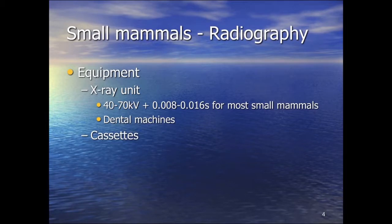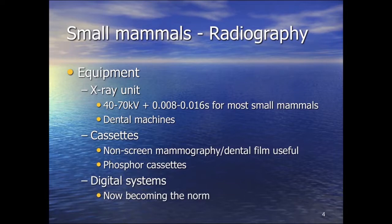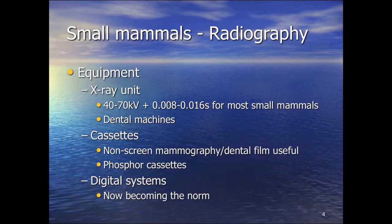Equipment-wise, for most small mammals, 40 to 60-70 kilovolts, 0.08 to 0.016 seconds is typically the minimum that you need. Most small head machines will go up to 90 or 100 kilovolts. Dental machines are really useful if we're talking about rodents and small birds because we can use non-screen film and a very focal short distance image which can give us magnification. The majority of cassettes now are digital — DR systems and CR systems. Mammography and dental film is still used and can give a high level of detail for some of the very small animals, but certainly digital systems are now standard.